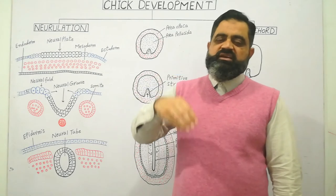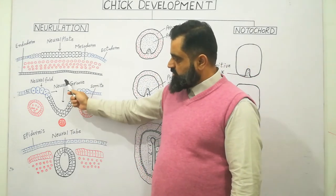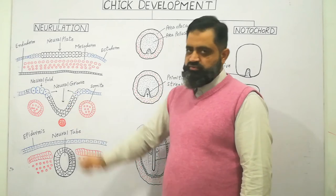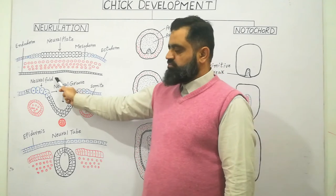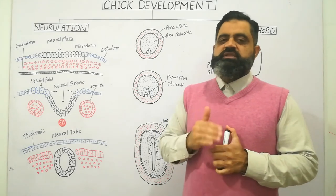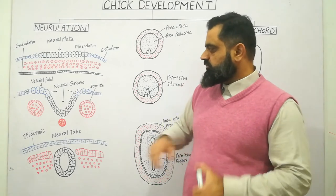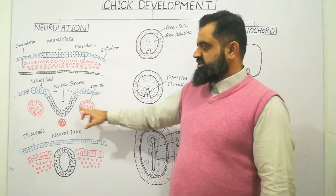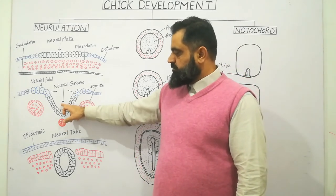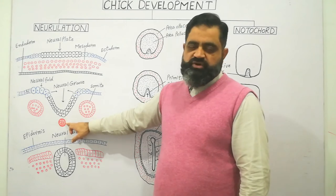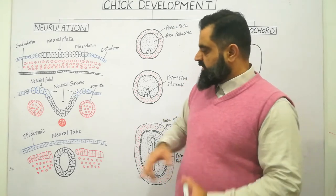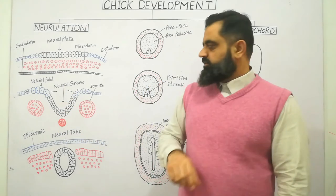Now these neural plate cells are going to sink downward. As you can see in this diagram, these black-colored cells are sinking down and making a groove-like, V-shaped structure known as the neural groove. The margins of this groove are known as neural folds or neural ridges. The remaining blue cells are ectoderm which are not going to form the nervous system; rather they are going to form the epidermis. On the lateral side of the neural groove there are somites — specialized cells that are going to form muscle cells of the embryo. Just below the neural groove is the notochord, which runs along the length of the whole embryo and forms the main axis of the body, developing into the vertebral column.